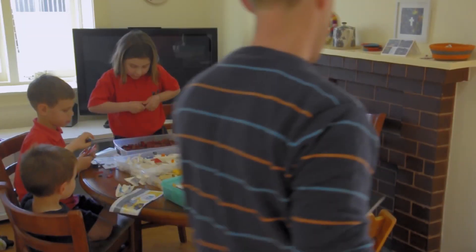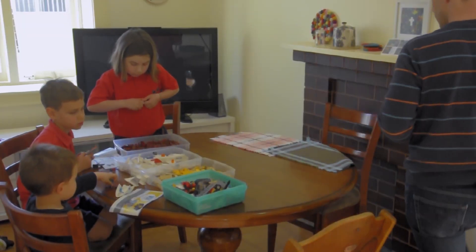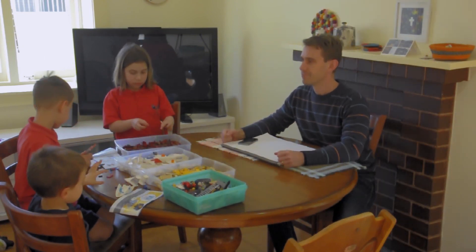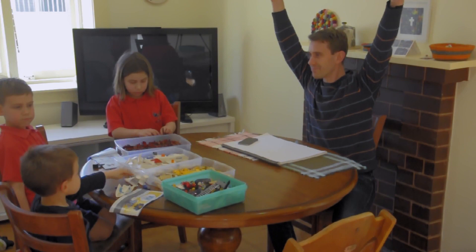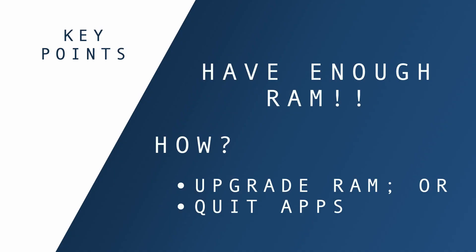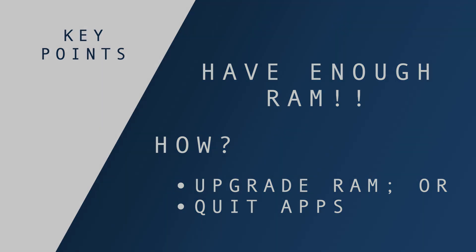Another approach is to either get rid of programs you don't need running or optimize your scene — both have the same effect of ensuring there's plenty of room in RAM. The key takeaway is to make sure you've got enough physical RAM to fit your operating system, other critical programs you need running, and the entirety of your scene in Blender or other applications. That way you'll get the full benefit of your CPU and GPU.